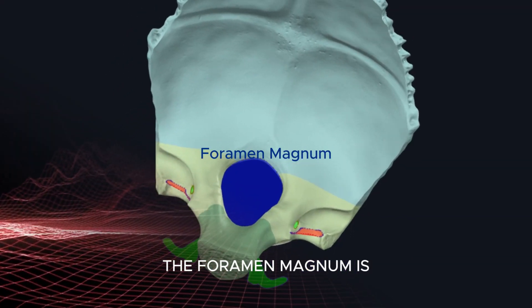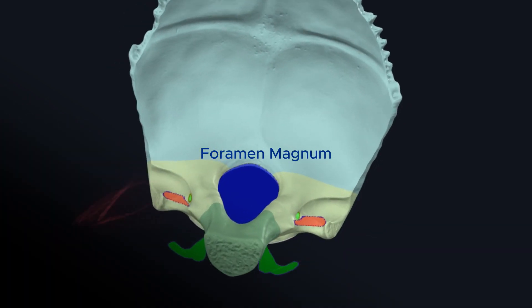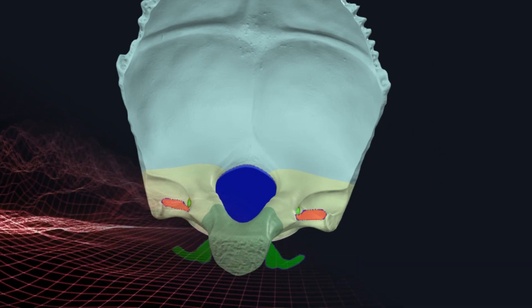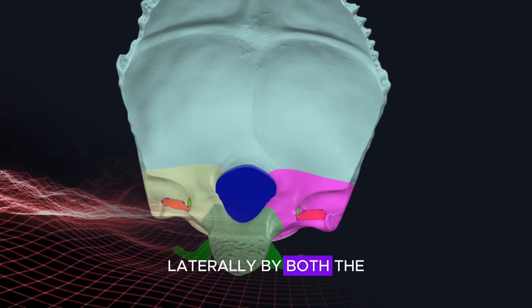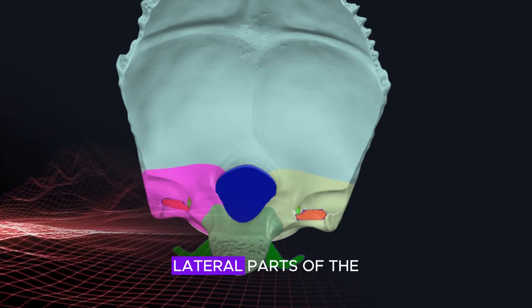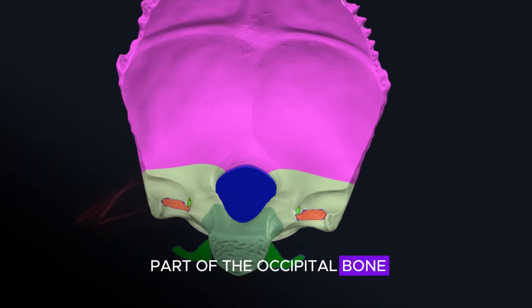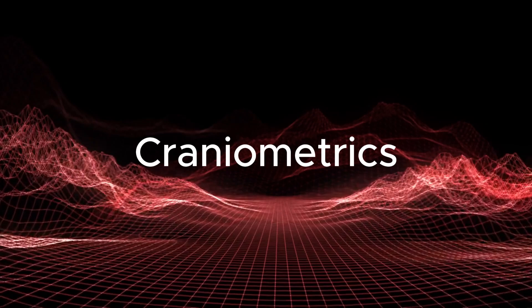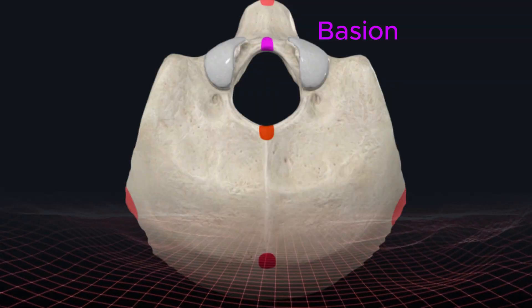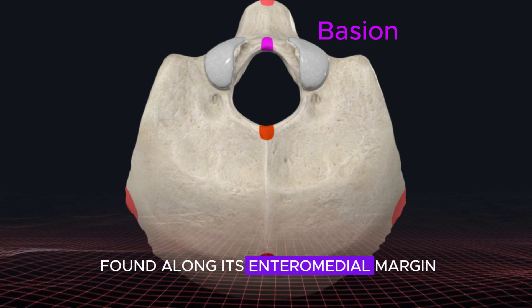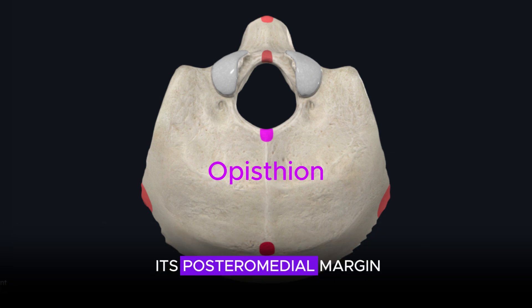The foramen magnum is a large oval opening found along the antero-inferior aspect of the occipital bone. Its margin is formed anteriorly by the basilar part, laterally by both the right and left lateral parts, and posteriorly by the squamous part of the occipital bone. Craniometric points along its margin include the basion (anteromedial margin) and the opisthion (posteromedial margin).